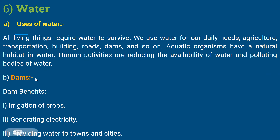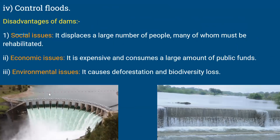A dam is a barrier built on a river or water resource. Benefits of dams: first, irrigation of crops — river water can be channeled to fields. Second, generating electricity — water stored in dams is used in electricity-making processes. Third, providing water to towns and cities. Fourth, controlling floods — dams reduce water flow and manage it in a controlled manner to prevent flooding.